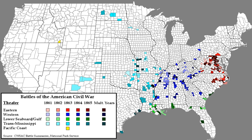Other battles and skirmishes, not rated by CWSAC, of the American Indian wars between either USA or CSA forces and the Apache, Arapaho, Cheyenne, Comanche, Dakota, Kiowa, Navajo, and Shoshone, which occurred during the American Civil War — including the Apache Wars, Colorado War, Dakota War of 1862, Navajo Wars, and Texas Indian Wars.